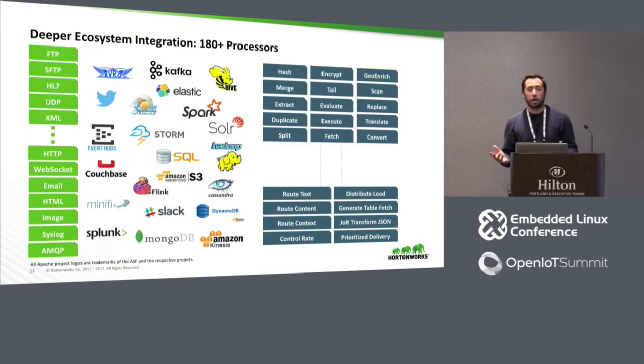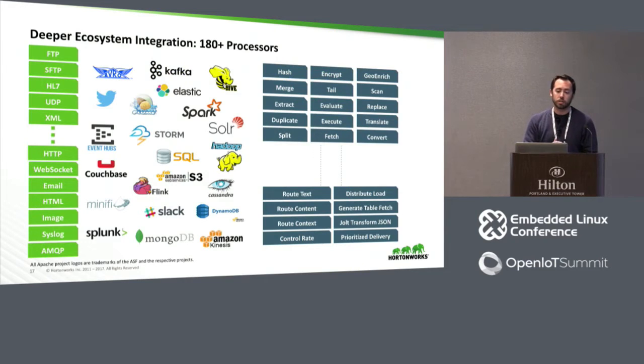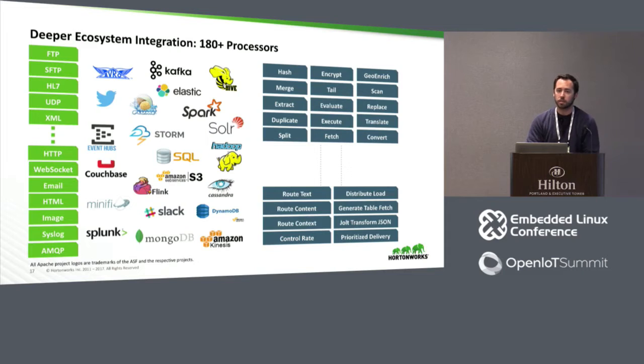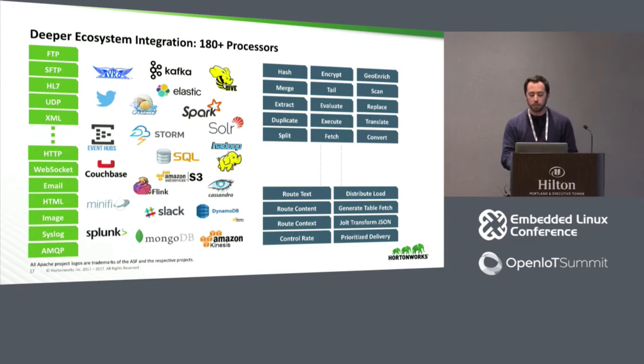We have integration right now out of the box with over 180 different processors — that's pretty much anything that's been on Apache's homepage in the last few months that you can connect to out of the box.